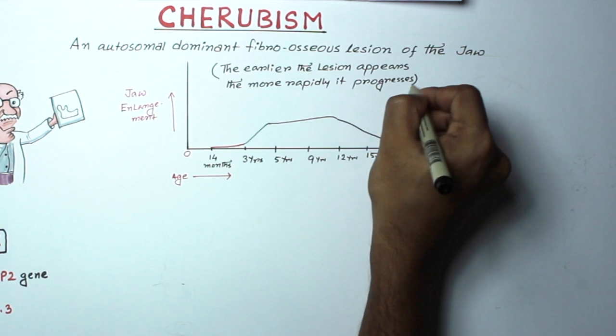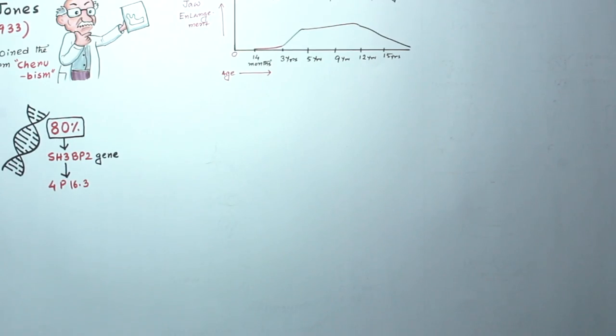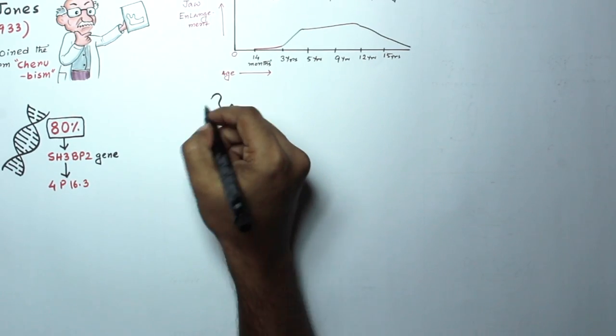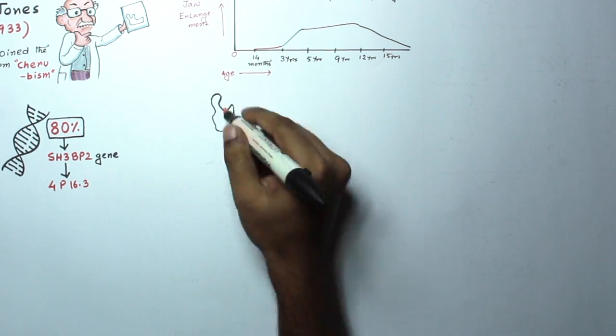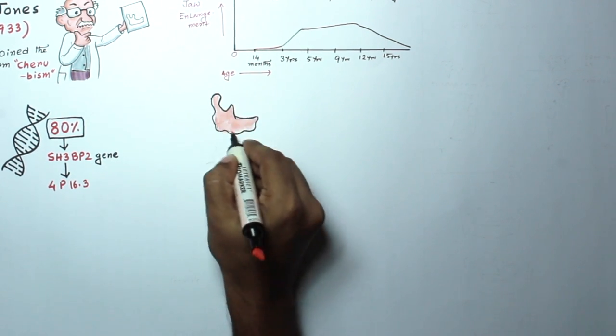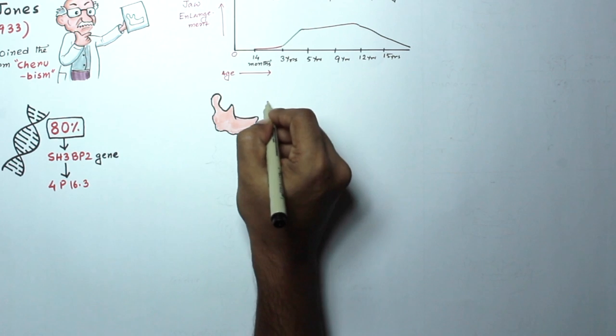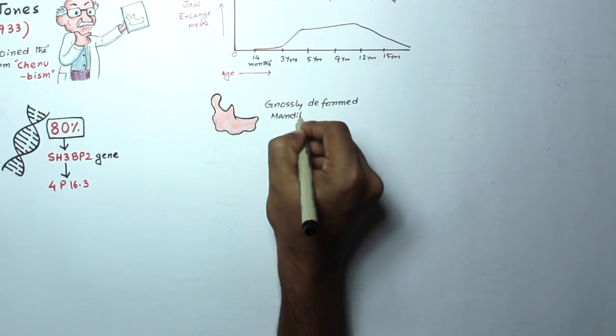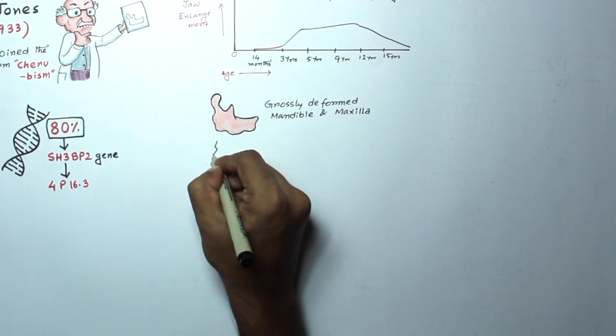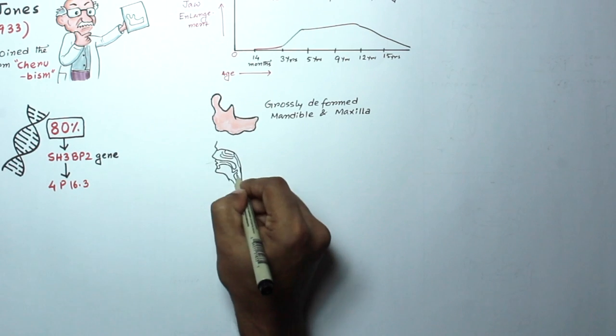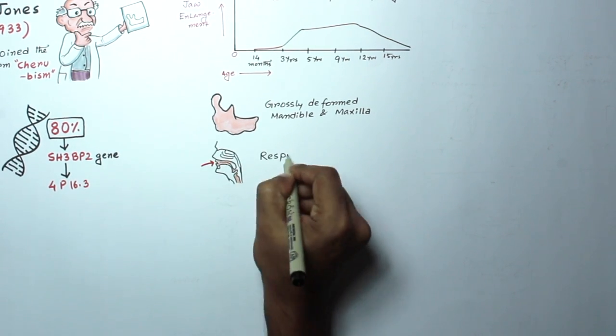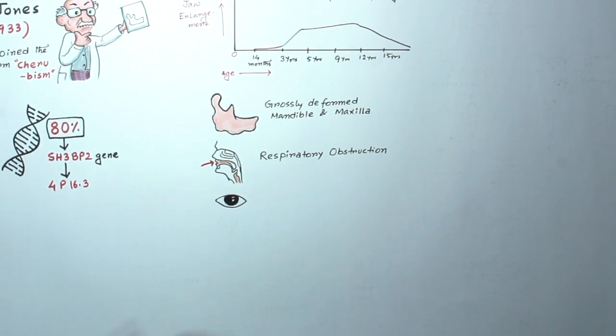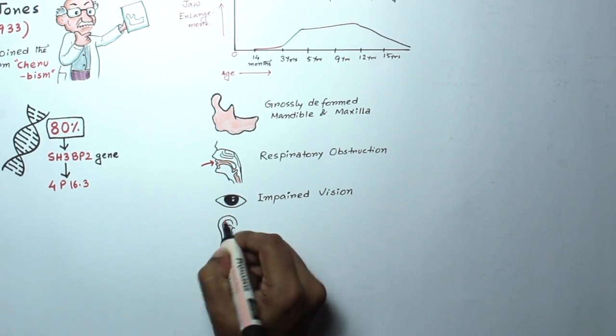The signs and symptoms depend on the severity of the condition and range from clinically and radiographically undetectable features to grossly deformed maxilla and mandible. Sometimes there's respiratory obstruction which can lead to obstructive sleep apnea, and sometimes impairment of vision and hearing.